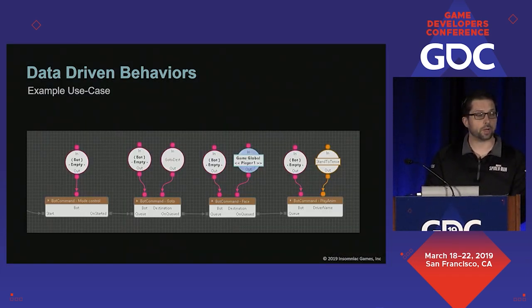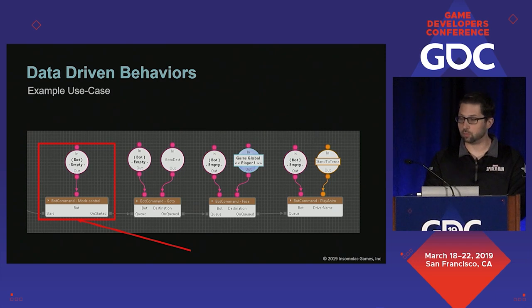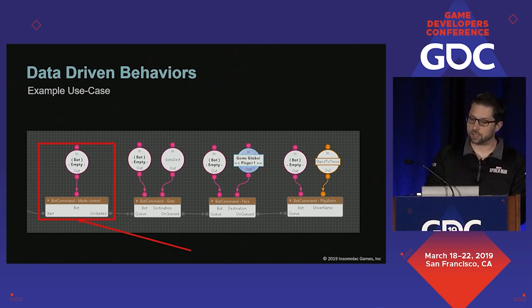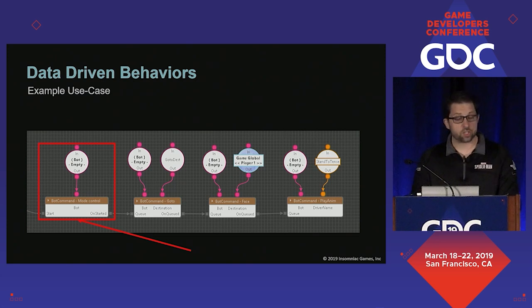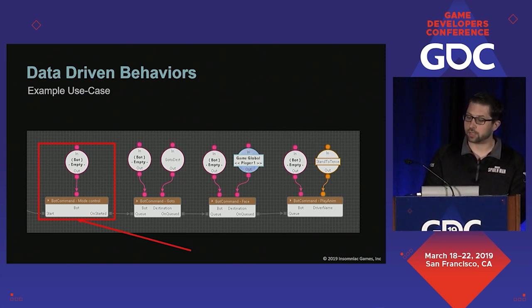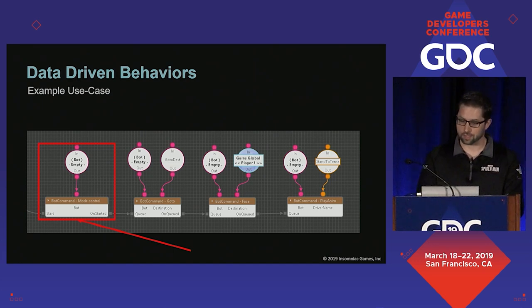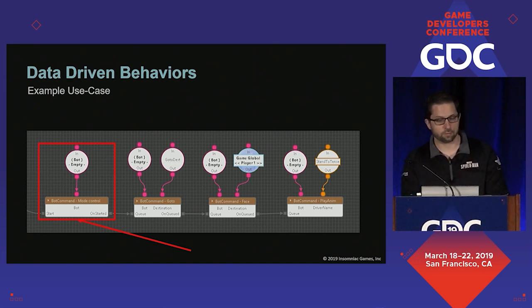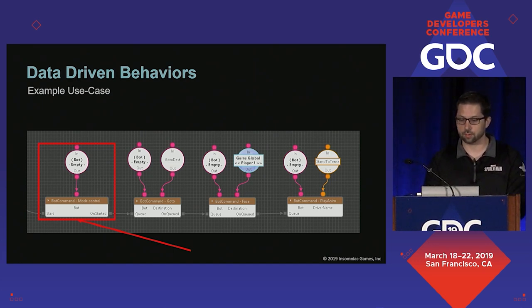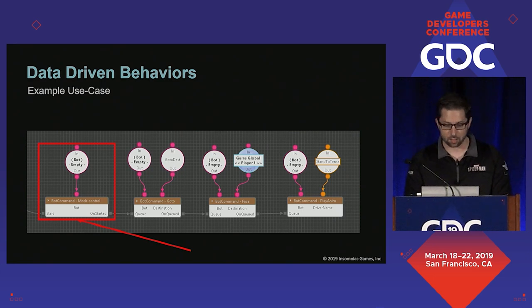Some of you may be wondering, why don't we data drive more? There are many times when an AI should not immediately respond to requests for script control. They could be jumping through the air, they could be in a cinematic, playing a hit react animation, or any number of other things. Our goal is to data drive the interesting player-facing problems, but also handle the difficult, squirrely, and bug-prone parts reliably in code.